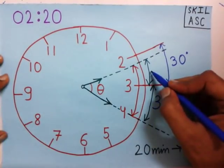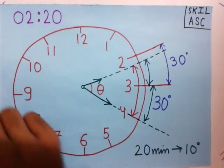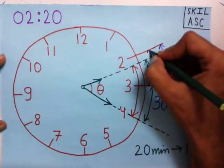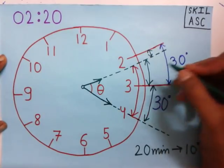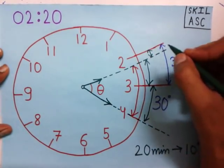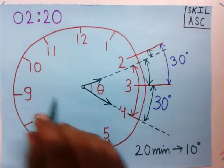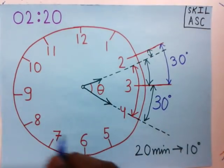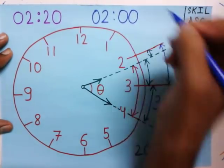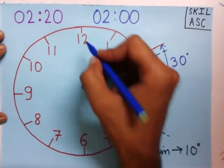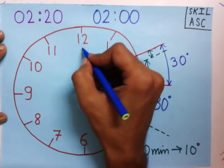To find the smaller sub-angle, we will find this angle and then subtract it from the 30-degree gap to get our result. Our aim is to find this angle. We take a reference time of 2:00 and show the clock hands at 2:00 in a different color.